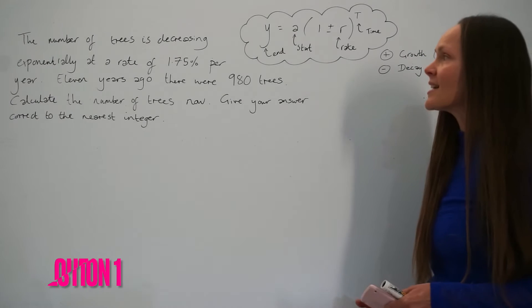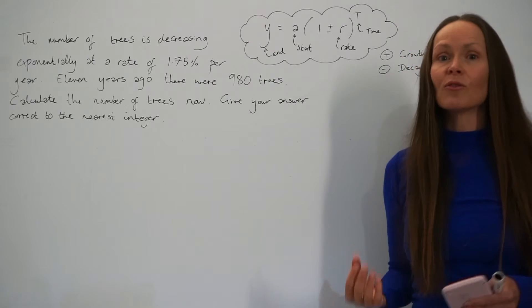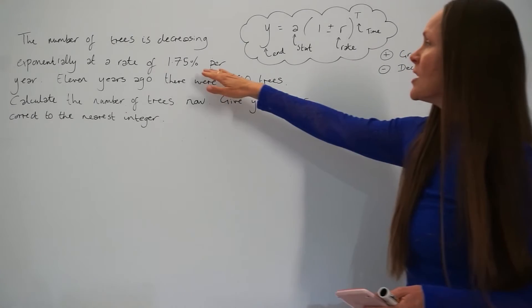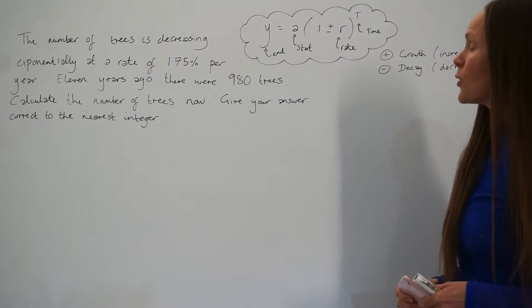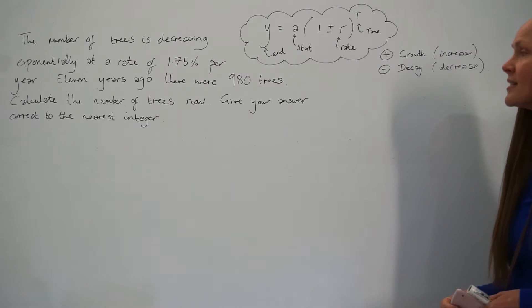So in the first question, it says the number of trees is decreasing exponentially at a rate of 1.75% per year. 11 years ago, there were 980 trees. Calculate the number of trees now. Give your answer correct to the nearest integer.